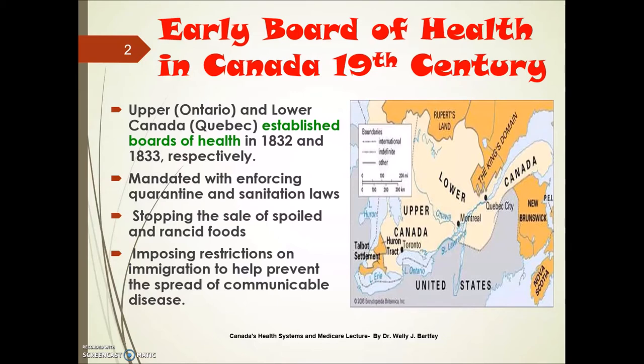Canada, as you can see from this map, was divided into basically Upper and Lower Canada, and we had the King's Domain and Rupert's Land to the north. Upper Canada was known as Ontario, and Lower Canada as Quebec. Both of these established boards of health in 1832 and 1833, respectively. They were mandated with enforcing quarantine and sanitation laws, and also stopping the sale of spoiled and rancid foods.